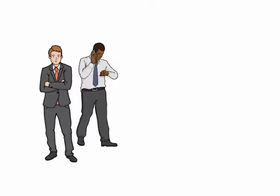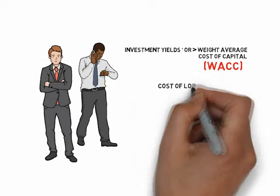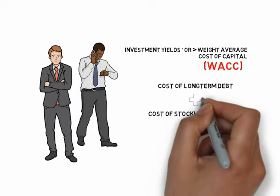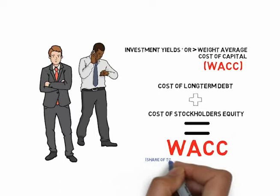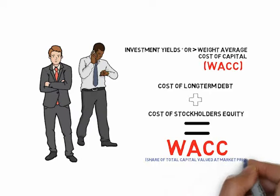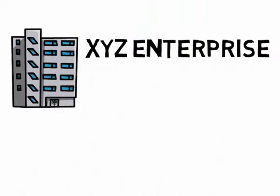More sophisticated investors would expect an investment yield that would at least equal or even exceed their weighted average cost of capital, or WACC. The WACC is the combined cost of long-term debt and the cost of stockholders' equity, computed on the basis of their respective share of the total capital valued at their market prices. If there were preferred shares, this would also be included in the computation of the WACC.